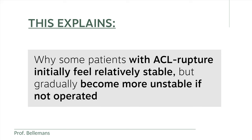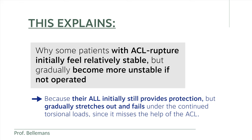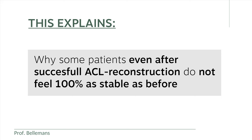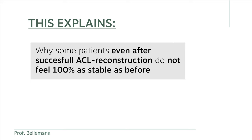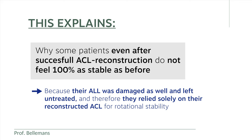We also did not understand why some patients with ACL rupture initially feel relatively stable but gradually become more unstable if not operated on. Now we know: their ALL initially still provides adequate protection, but gradually stretches out and fails under continued torsional load since it lacks the help of the ACL. We also did not understand why some patients, even after successful ACL reconstruction, do not feel 100% as stable as before. Now we know: their ALL was also damaged and left untreated, so they solely relied on the reconstructed ACL's posterolateral bundle for rotational stability, which is insufficient without a solid ALL.